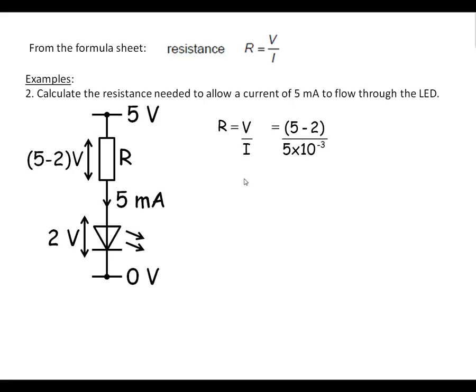R equals V over I. Put in the numbers. So, 3 volts. And we've got 5 milliamps. And that comes up as 600 ohms.